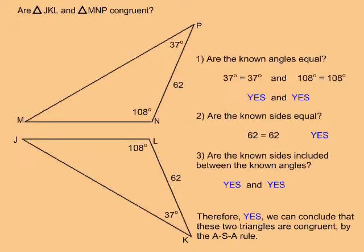Question 3 says, are the known sides included between the known angles? In both cases, yes, the 62 unit side is located between the 37 degree and 108 degree angles. Therefore, yes, we can conclude that these two triangles are congruent by the ASA rule.